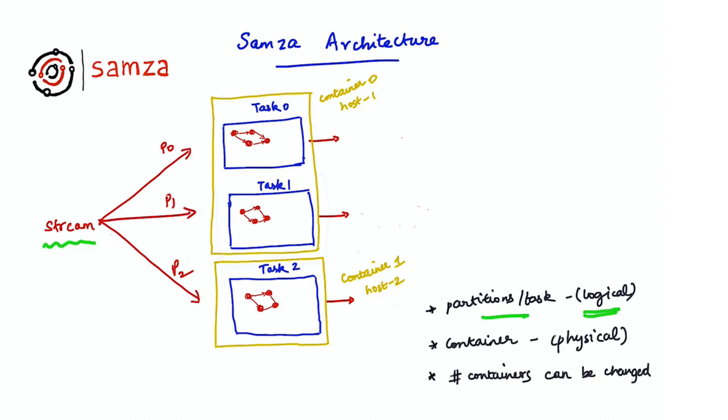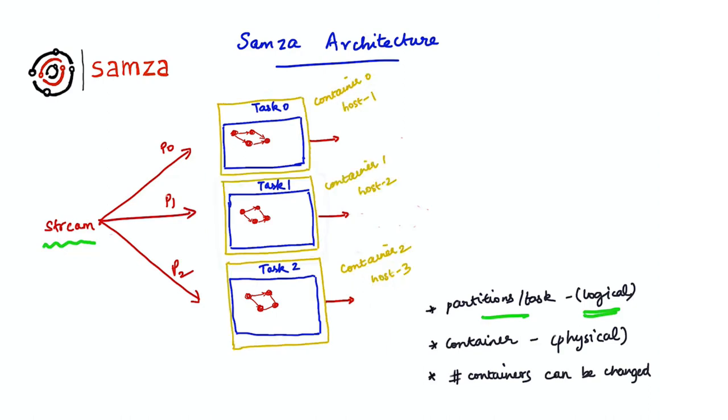For example, you could currently have two containers running on these two hosts and decide to add an extra container for more parallelism. Once a new container is added, the tasks get evenly distributed across all containers.